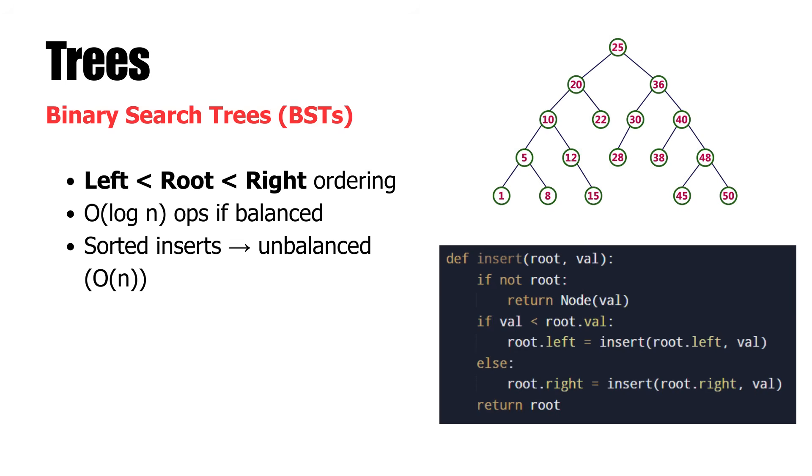But if the insertions are being performed in sorted order, then the tree would become unbalanced and the majority of the nodes would be skewed to one side. In that case, operations become linear time like a linked list. To prevent this, we use self-balancing trees such as AVL trees and red-black trees.